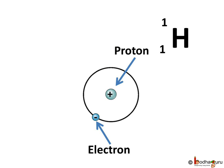Neutrons are present in the nucleus of all atoms except for hydrogen. The mass number of a hydrogen atom is 1 and the atomic number is 1, which means the number of protons is 1. The number of neutrons is equal to mass number minus atomic number, which is equal to 1 minus 1, that is 0. Hence, 0 neutrons are present in an atom of hydrogen.